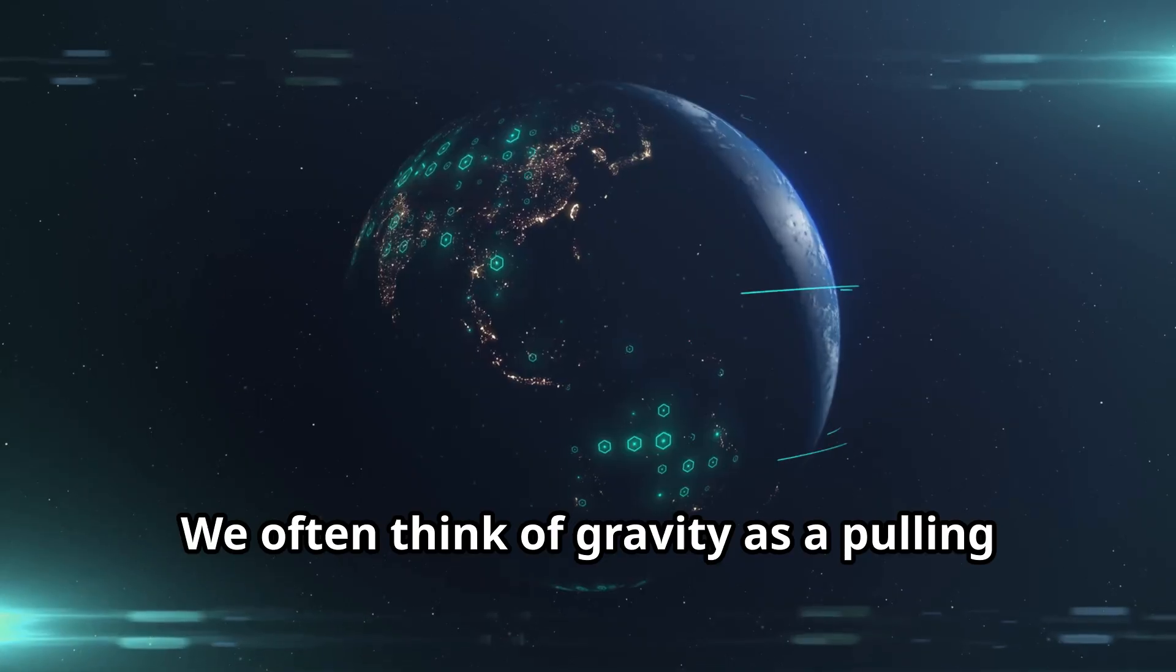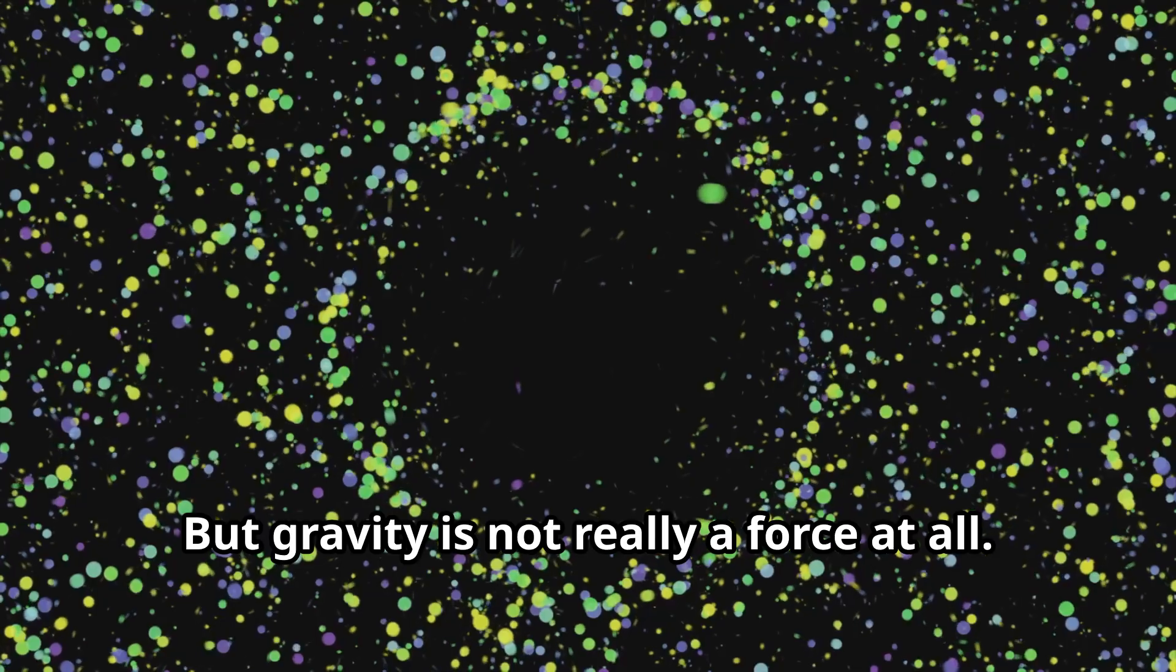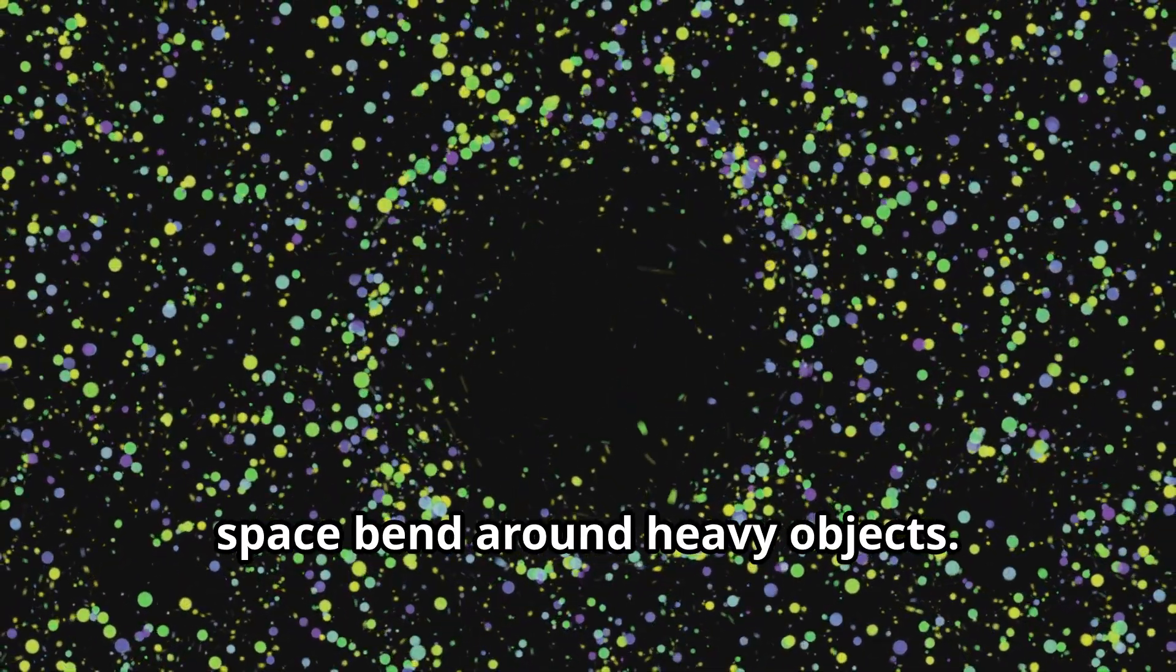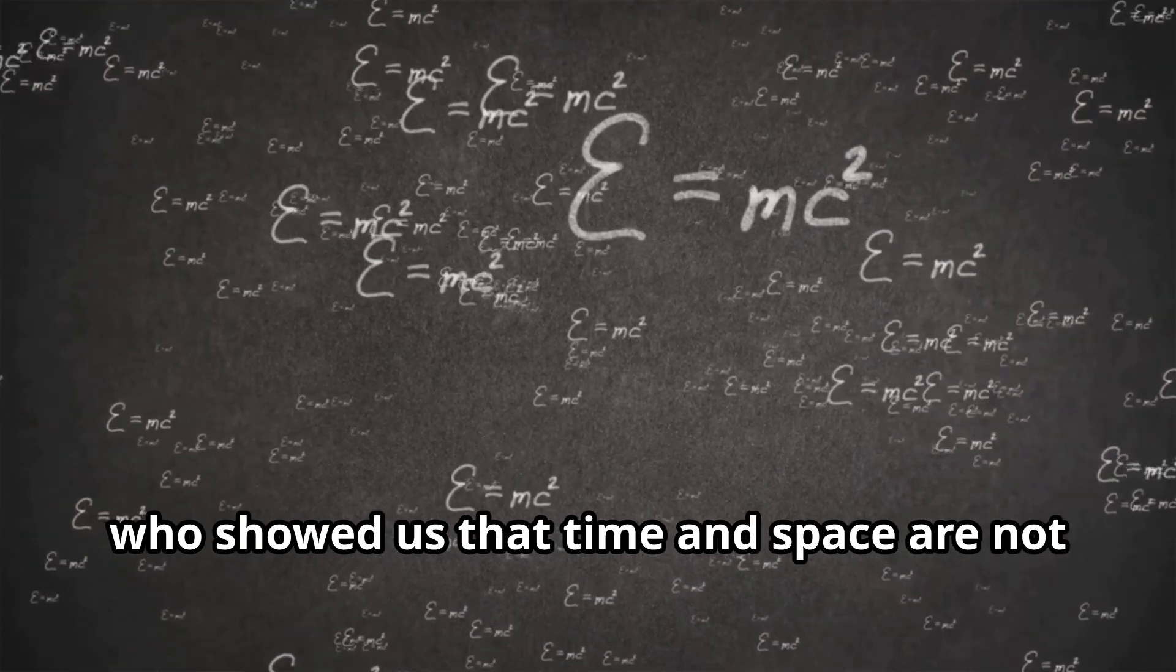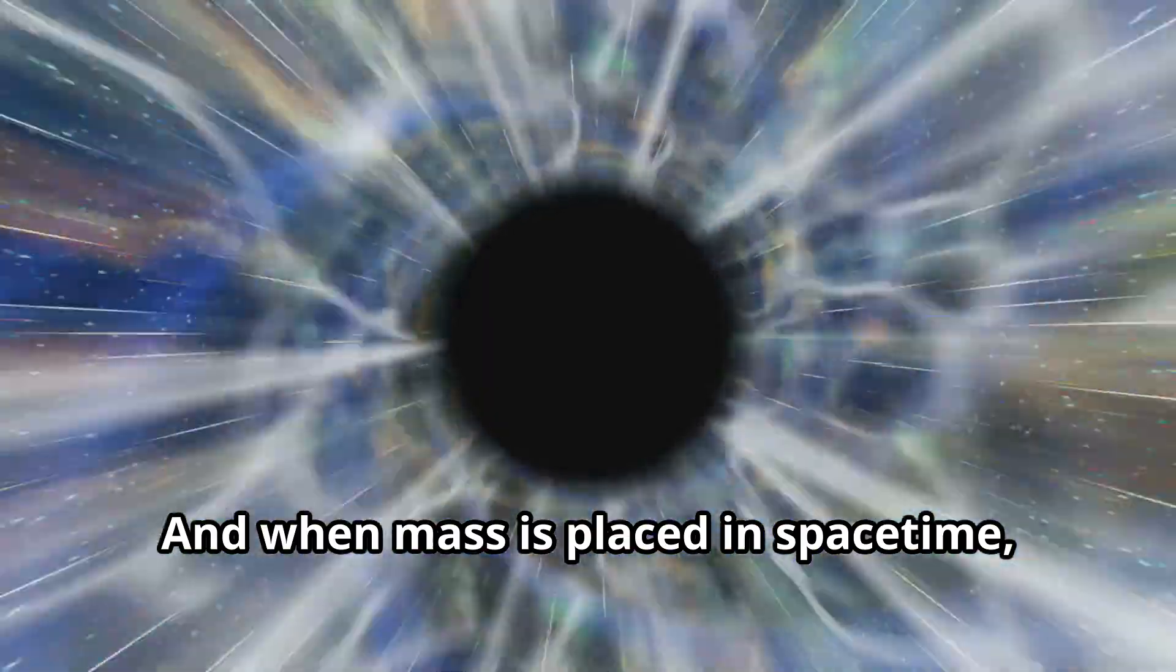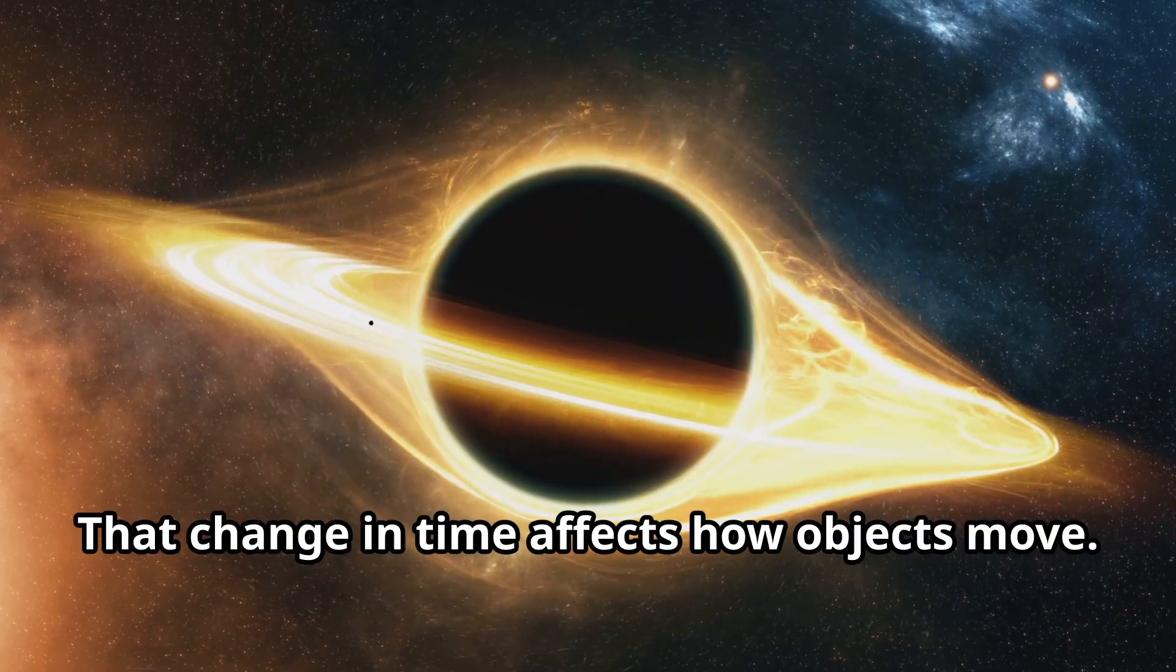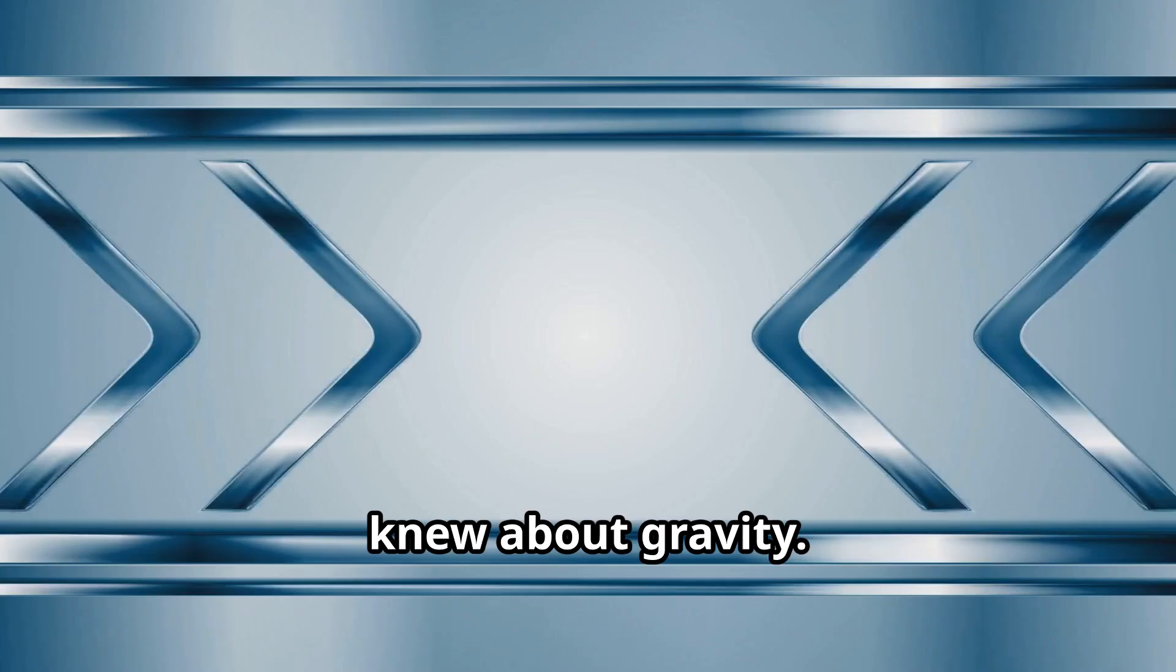Gravity. We often think of gravity as a pulling force that keeps us on the ground or makes things fall. But gravity is not really a force at all. It is the result of the way time and space bend around heavy objects. This idea comes from Albert Einstein, who showed us that time and space are not two separate things. Together they form something called space-time. And when mass is placed in space-time, it changes how time flows. That change in time affects how objects move. So when something falls, it's actually following the path created by bent time.